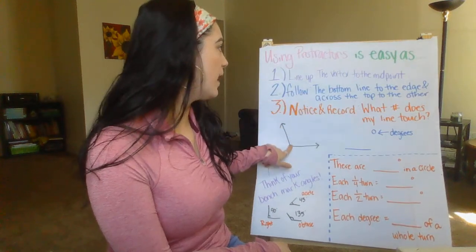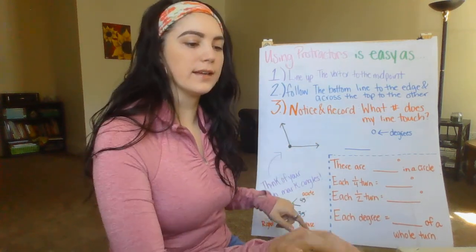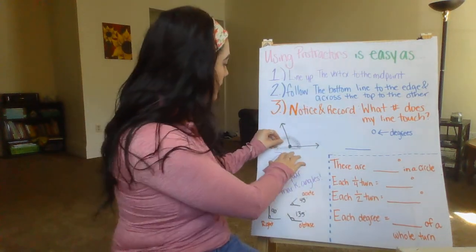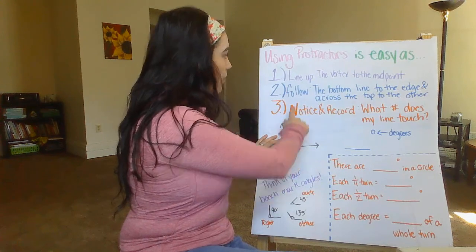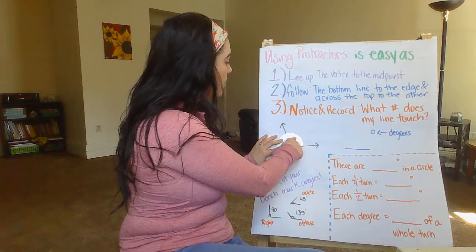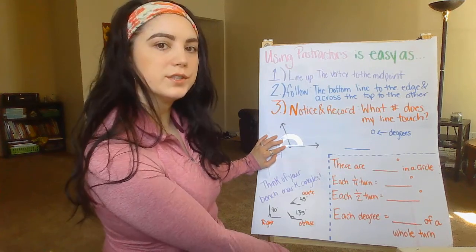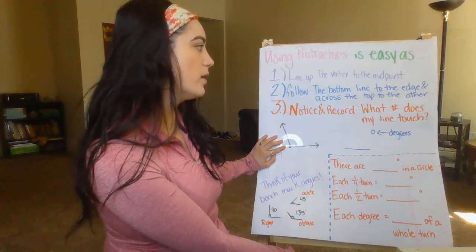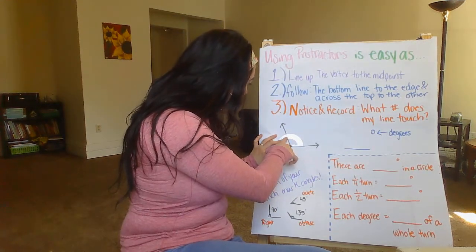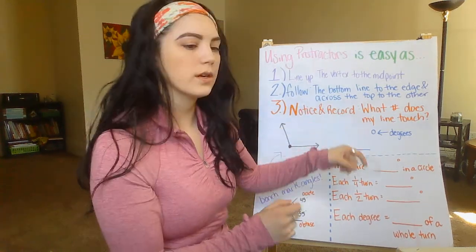Then you follow the bottom line to the edge and across the top to the other line. I would take my protractor, line up the vertex to the midpoint of my protractor, follow the bottom line to the edge, and then up and around to my other line. Step three is to notice and record what number your line touches. Following it out and over, I would see that this line lands on 100 degrees — so I would write down 100 degrees.